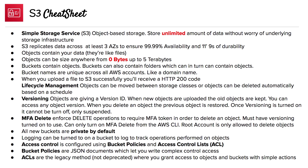Objects contain your data — you can think of objects like files. Objects can be sized anywhere from zero bytes to five terabytes. Zero bytes is highlighted because most people don't realize objects can be zero bytes in size. Buckets contain objects, and buckets can also contain folders which can in turn contain objects. Bucket names are unique across all AWS accounts, so you can treat them like domain names — your bucket name has to be unique within the entire world.